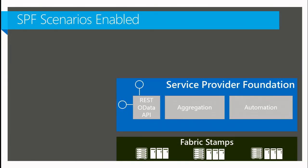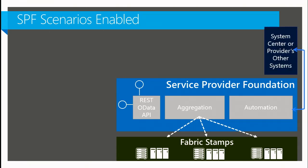Back on slides — there are a couple different scenarios that SPF enables once deployed. You can think of multiple VMM servers or stamps with SPF across the top performing aggregation of the information behind them. The endpoint can be called in a couple different ways because we have a couple different authentication models. Automation is the way we allow hooks into anything SPF doesn't inherently do — I think of it as the get-out-of-jail-free card. If there's anything SPF needs to do that it doesn't inherently support, automation is the way to make it happen, and that will only be more true as we go.